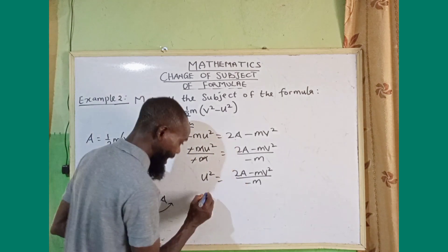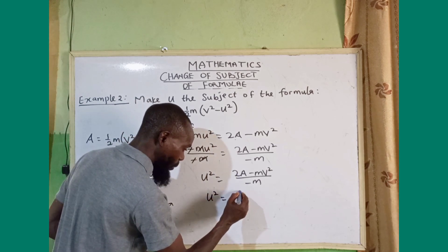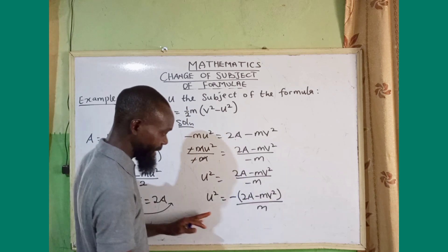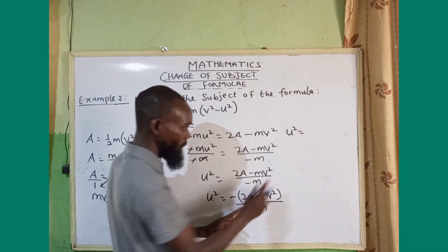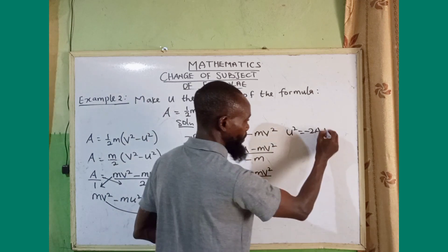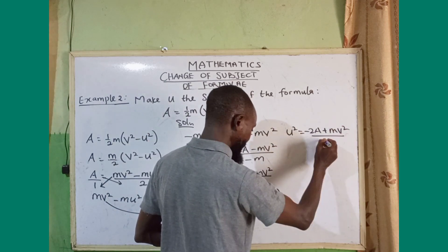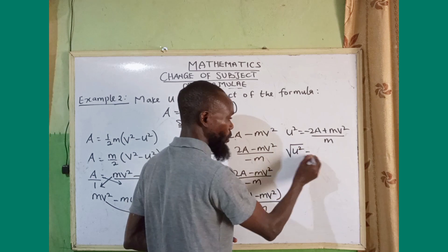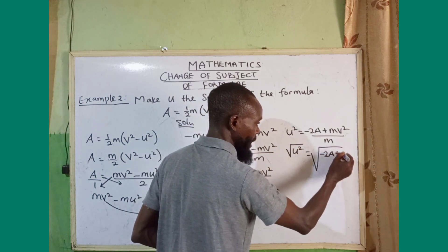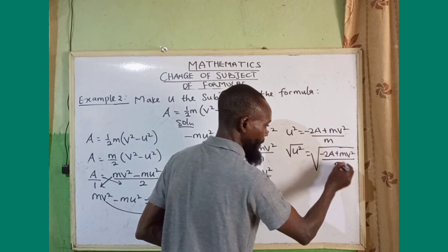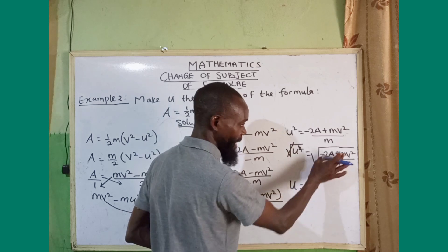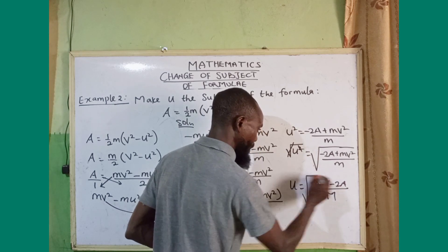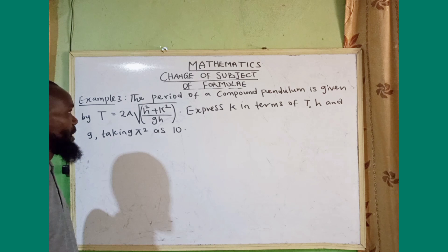I can move the minus sign up top, so u squared equals minus open bracket 2a minus mv squared, all divided by m. Opening the bracket: u squared equals minus 2a plus mv squared over m. Finally, taking the square root of both sides gives u equals the square root of mv squared minus 2a, all divided by m.